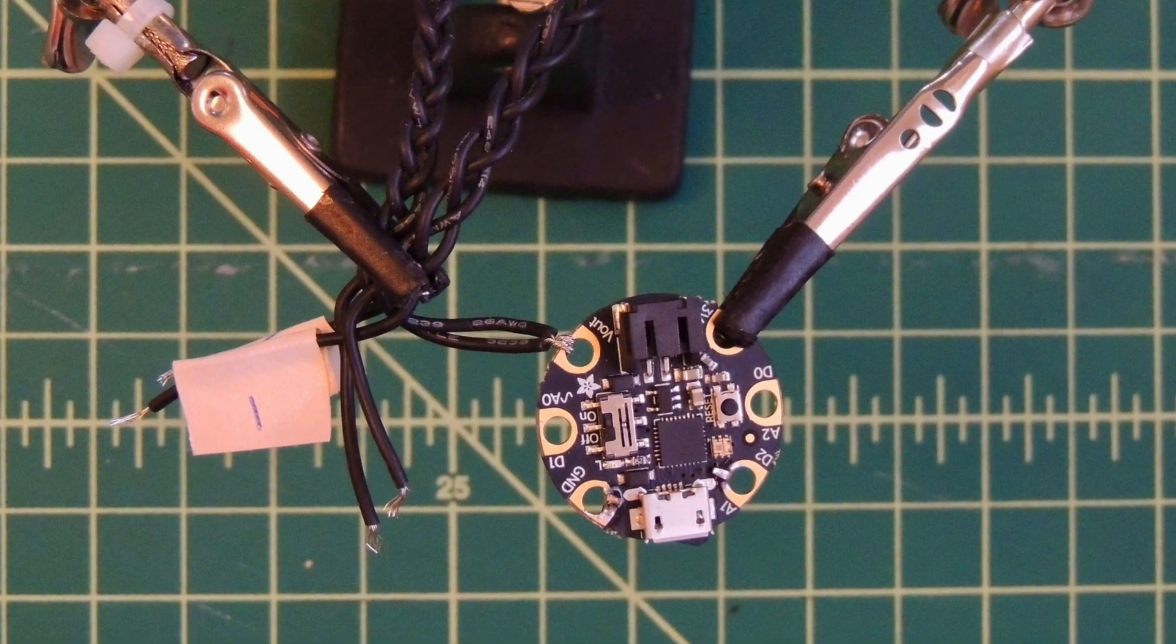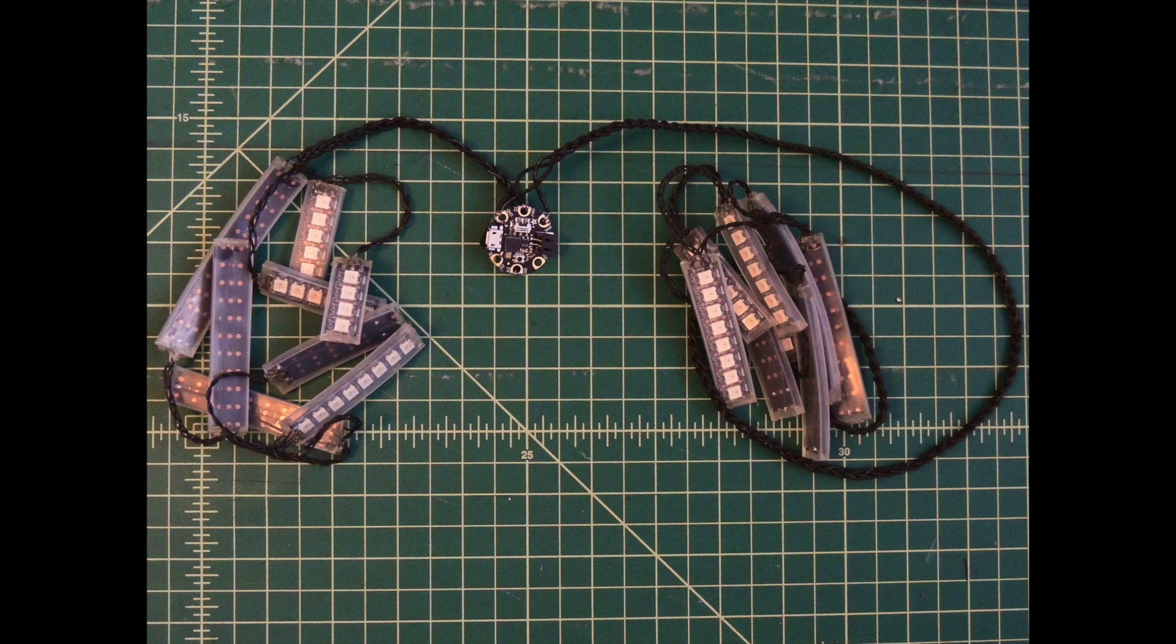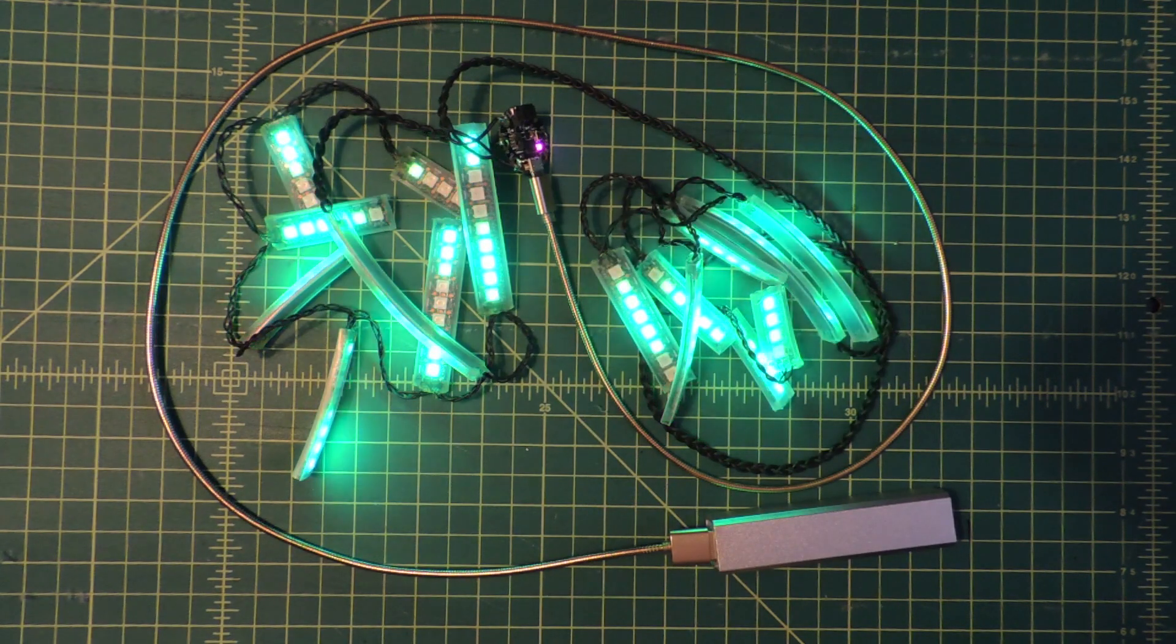Beginning with the power and ground wires this time, attach to the Gemma and solder. Give the button both short and long presses to see changes on the modes and the brightness settings.